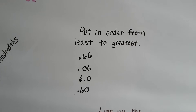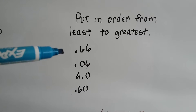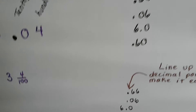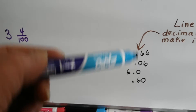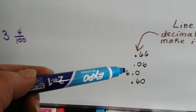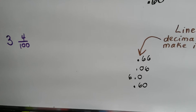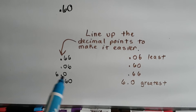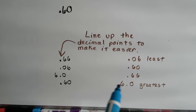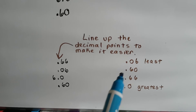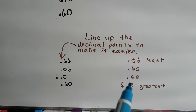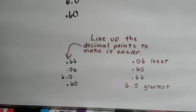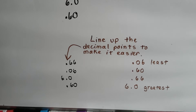Let's try it again. We want to line these up in order from least to greatest, but the decimal points are not in the right place. So we line them up so the decimal points are all in a row, and we can see that we have 6.0 — that's a whole six. So from least to greatest: six hundredths is the least, six tenths is the next biggest, then sixty-six hundredths, and then six is the greatest.